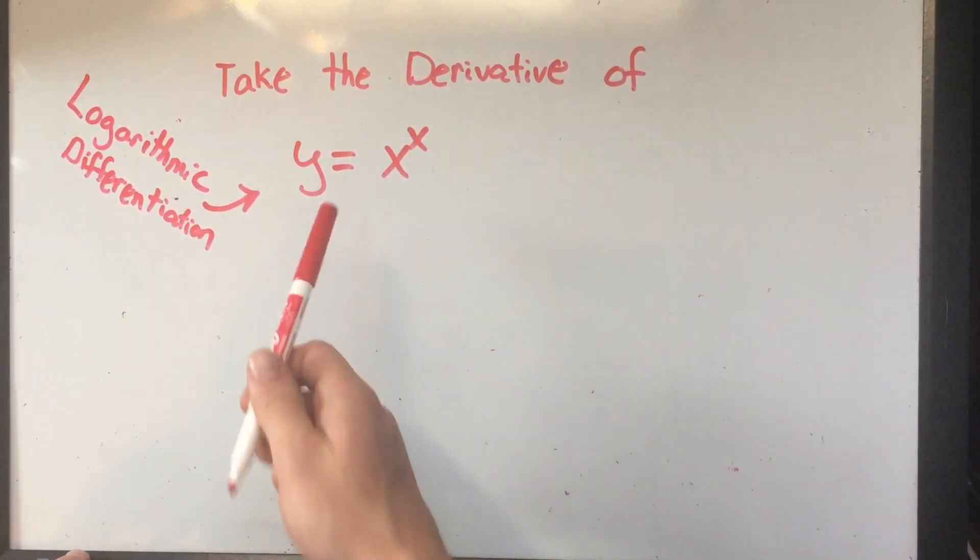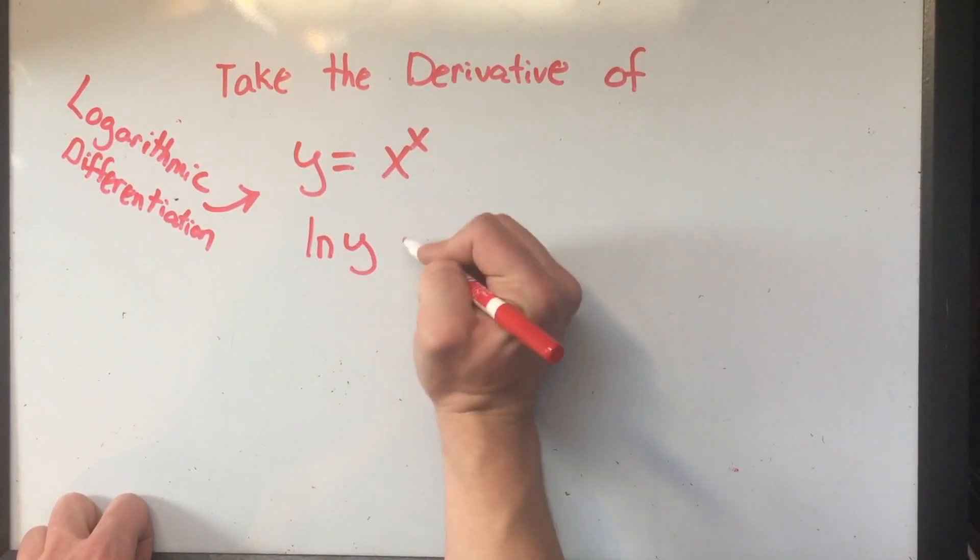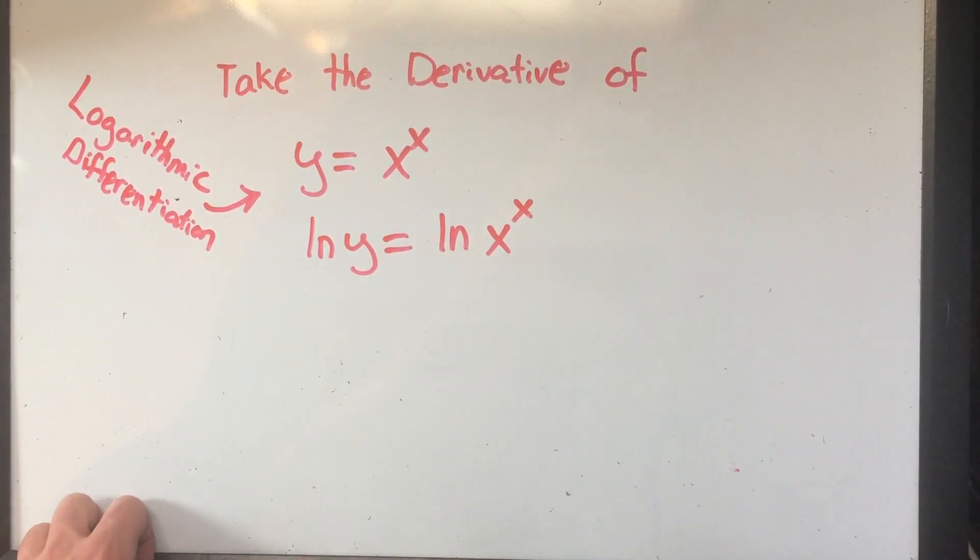And I'll show you why it's called that. Basically, because the first thing we do is we take the log of both sides. And I'm just going to use the natural logarithm. You pretty much could do this with any log base you want, but everyone always uses the ln, the natural logarithm.